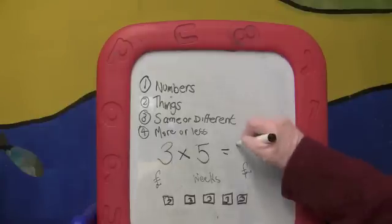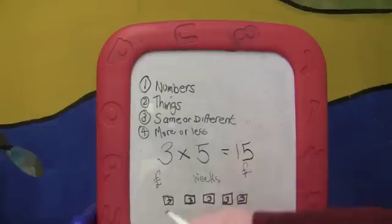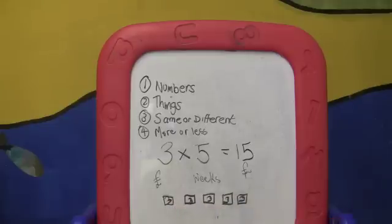Three times five is fifteen. Three, six, nine, twelve, fifteen.